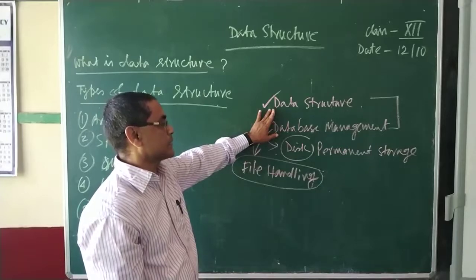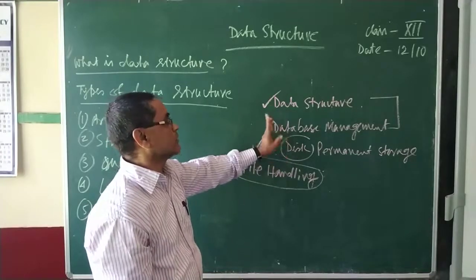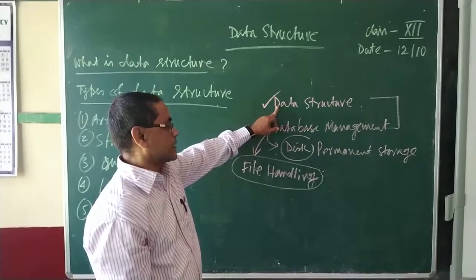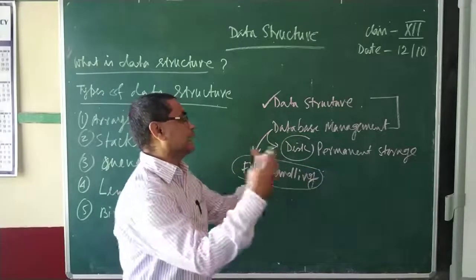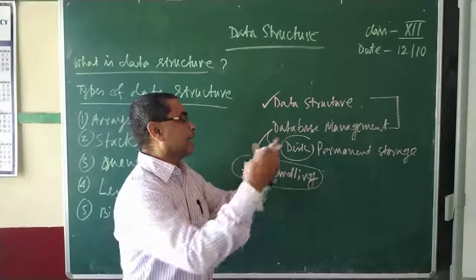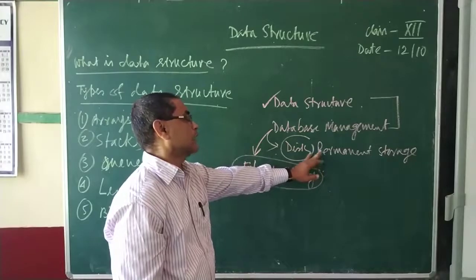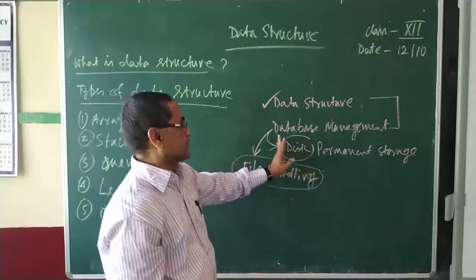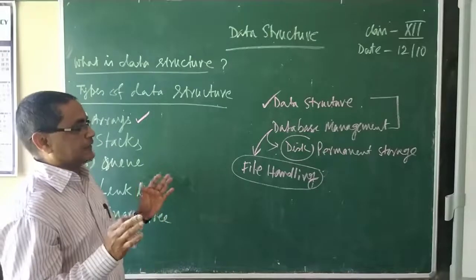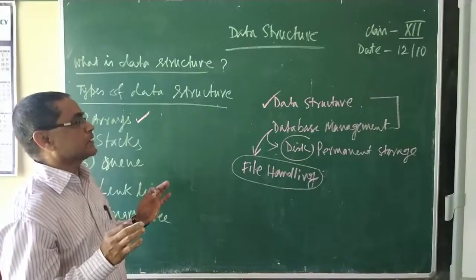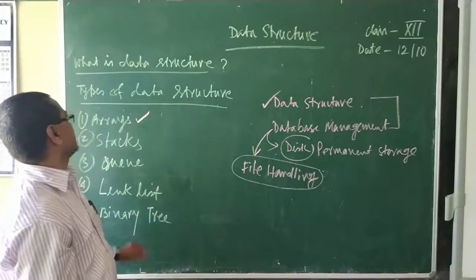In exams they generally ask what is the basic difference between the two. Both deal with many data, but database management deals with even more data than data structure, with an efficient balance, and it uses permanent storage. When you work, it gets data from there, does the work, modifies it, and stores it back. Data structure is purely a technical concept that checks your programming capability — especially with small data and groups.